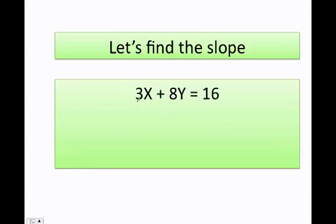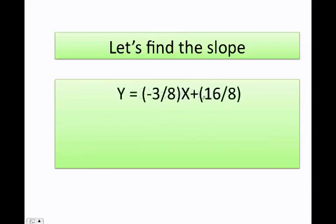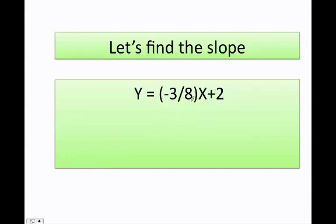What if I have an equation that is not already in y = mx + b form? I need to solve for y. Moving 3x to the other side gives negative 3x, then I divide everything by 8. Once I divide by 8, I get y equals negative 3 over 8 times x plus 16 over 8. Simplifying, my slope is negative 3 over 8 — the value next to x.